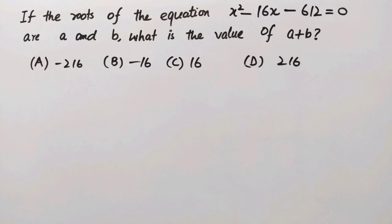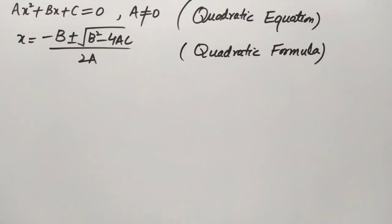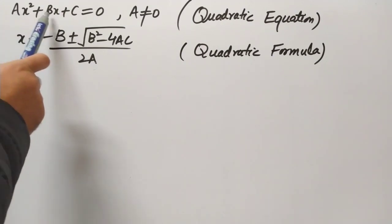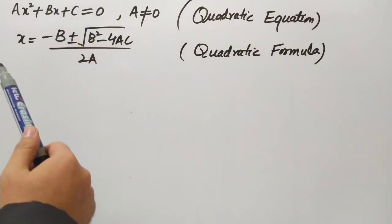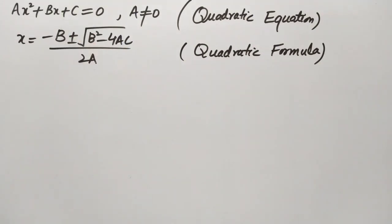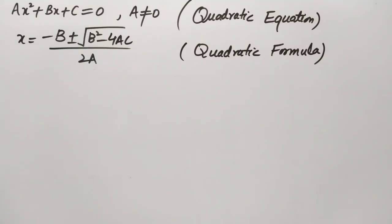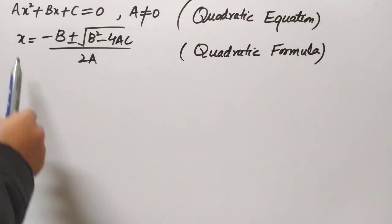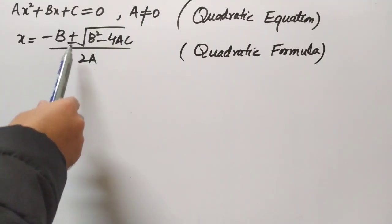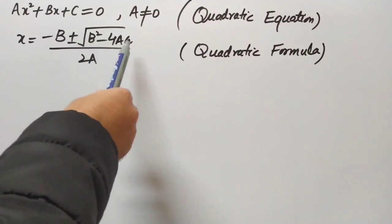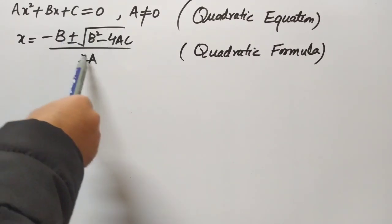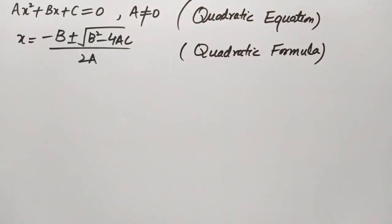We are going to solve it from the very beginning. Let ax² + bx + c = 0, where a is not equal to zero, be a quadratic equation. We all know this. And x = (−b ± √(b² − 4ac)) / 2a is the quadratic formula.